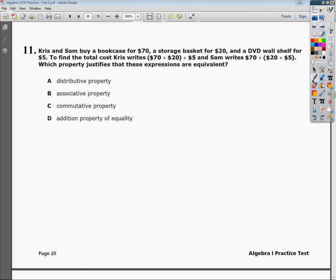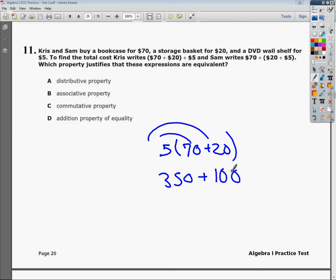Well, distributive property would be if I had a number that I wanted to multiply both terms by. So if for some reason they bought five groups of this, and one showed it this way and the other showed it this way, that's fine. But it's not distributive property because there's no multiplying involved. They're not rewriting it a different way. It's exactly the same except they put the grouping symbols in a different spot.